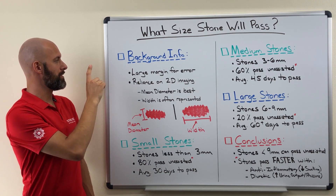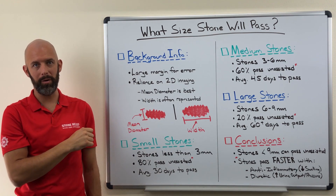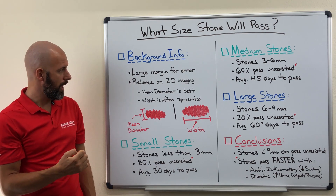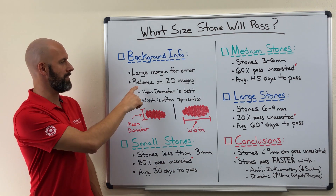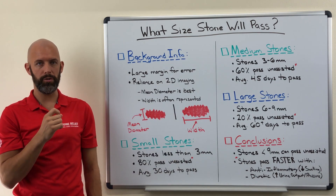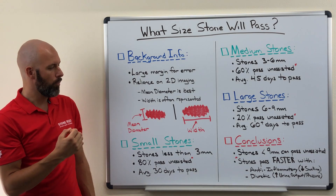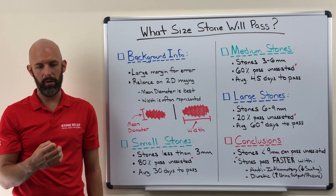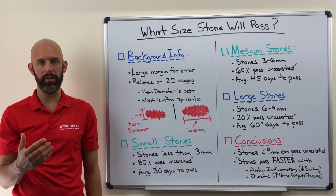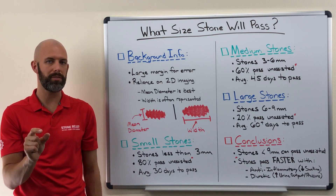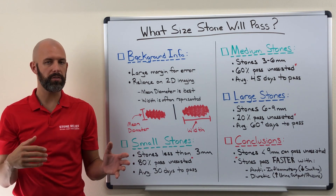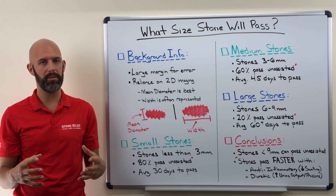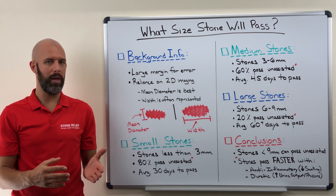First and foremost, there is an incredibly large margin for error when it comes to the stone size measurement you're going to get from your urologist or doctor. A lot of that hinges upon our reliance on 2D imaging for determining the size of the stone. When we look at an imaging procedure — whether it be an x-ray, a CT scan, an ultrasound, or any other variant — they're all flat images. There are some newer techniques that allow us to see a 3D model, but by and large, most of us going to see a hospital or doctor will be relying on 2D imaging.